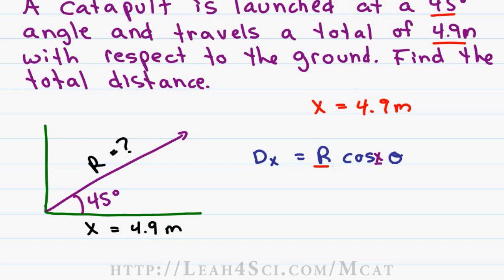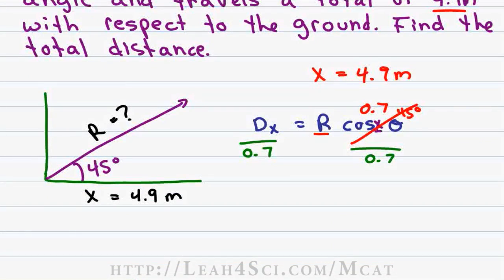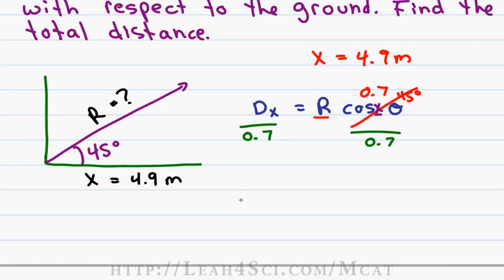Let's replace cosine of 45 degrees with the value that we memorized 0.7 and divide both sides by 0.7 to isolate our unknown. Anytime you're solving for an equation where your unknown is not alone, first isolate your unknown, rewrite your equation into something simple and doable then start plugging in your numbers because you'll save a lot of time and confusion this way. And here's the equation we're solving for. The resultant is equal to the distance in the x direction which is 4.9 meters divided by 0.7 which is the cosine of 45 value and then we solve.